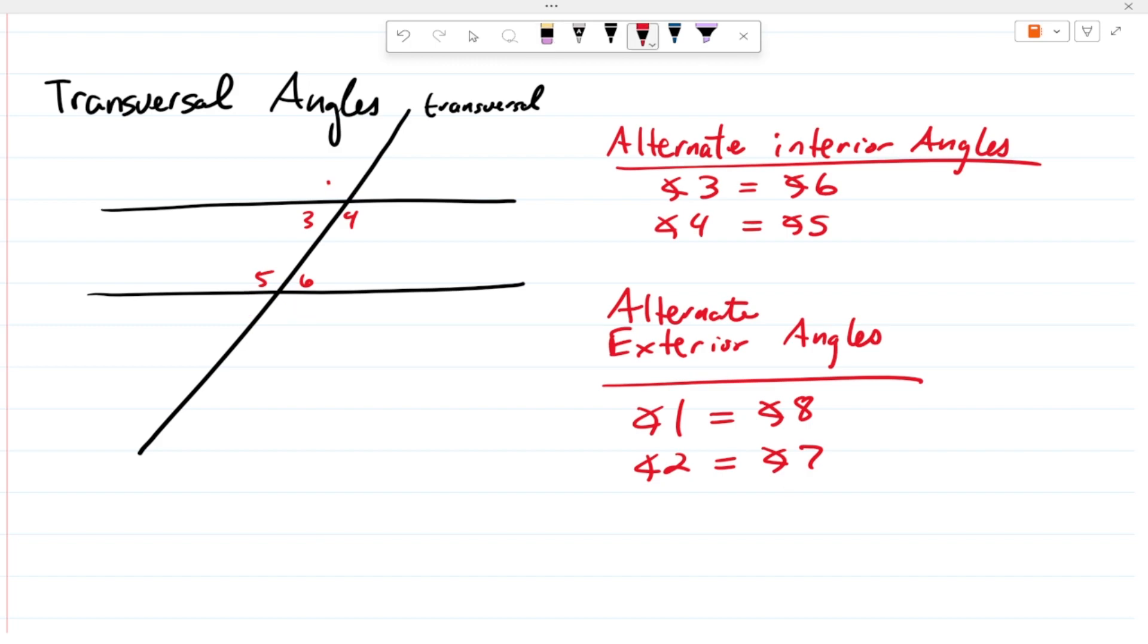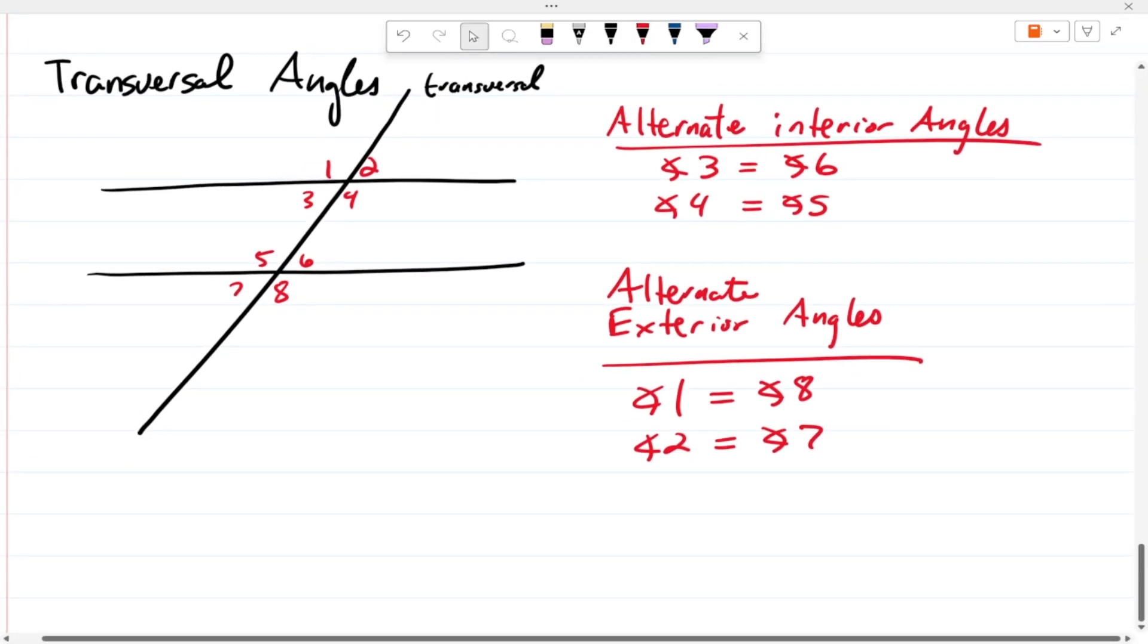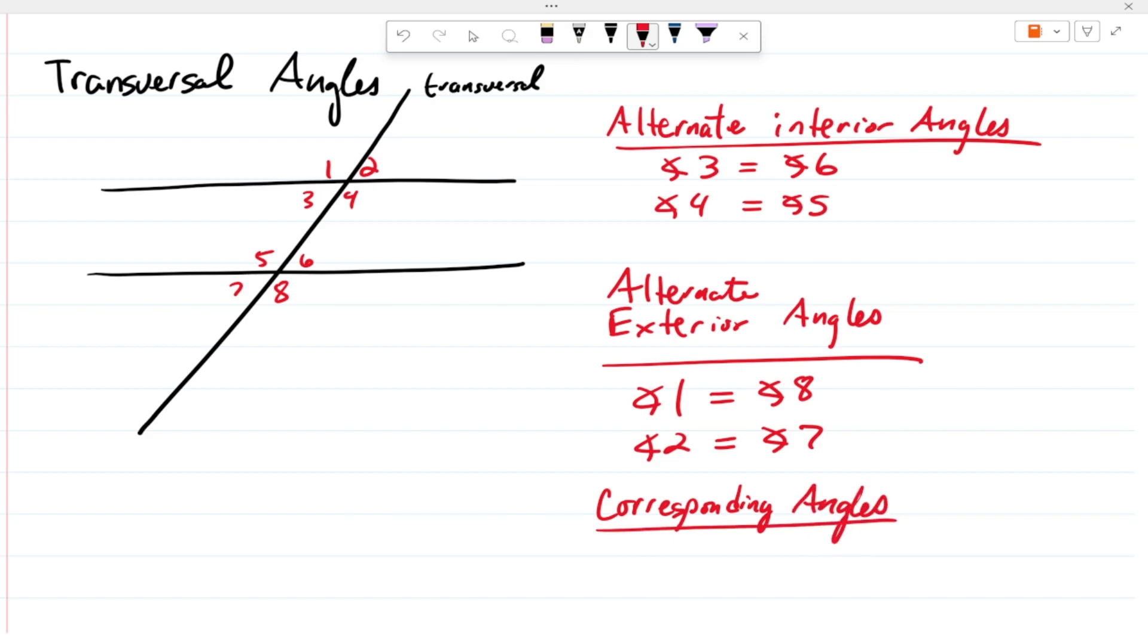And finally, we have what we call corresponding angles. Now corresponding angles would be angle one equals angle five. Angle three equals angle seven. Angle two equals angle six. And angle four equals angle eight. And those are all of the corresponding angles. And that's all the angles that we need to worry about.